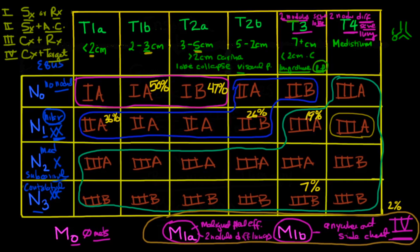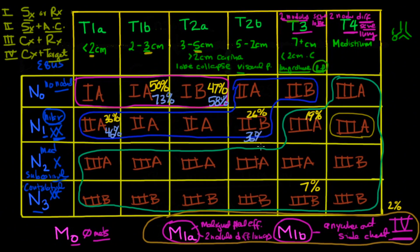Pathologically proven stage 1A — where lymph nodes are truly negative — has a 73% five-year survival. Pathological survival rates: 1A = 73%, 1B = 58%, 2A = 46%, 2B = 36%, 3A = 24%, 3B = 9%, and stage 4 = 13% five-year survival.